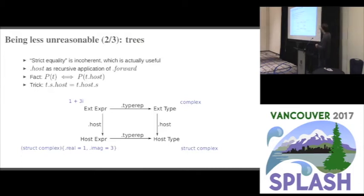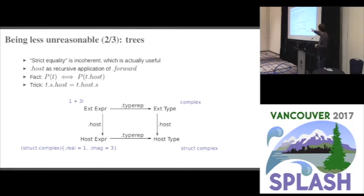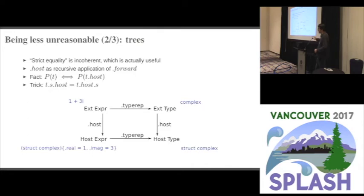We get a kind of commutative diagram. If we have a complex numbers extension, there is some extension expression on the upper left that can have a new type representing complex numbers, where the translation down to the host language constructs, say, a struct in C. That type representation — something like 'struct complex' — is meaningfully different from the extension type, but these two values are now related, and that relation makes it acceptable to have those different values.